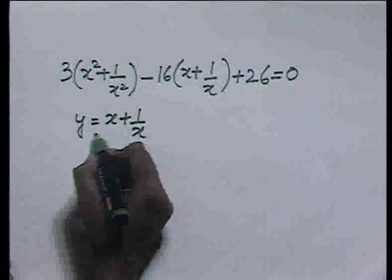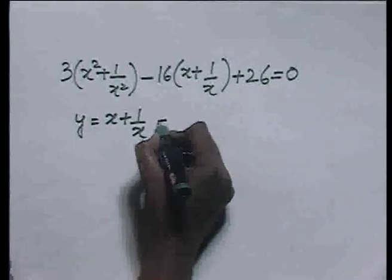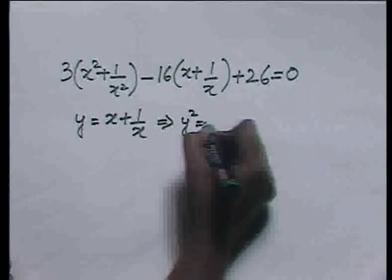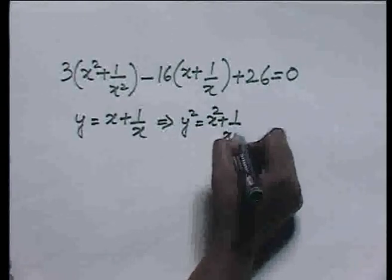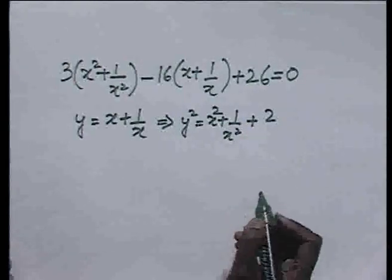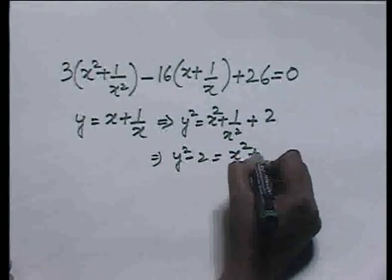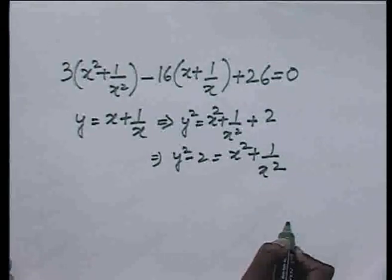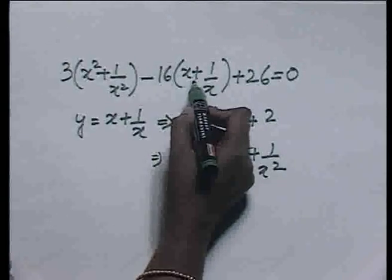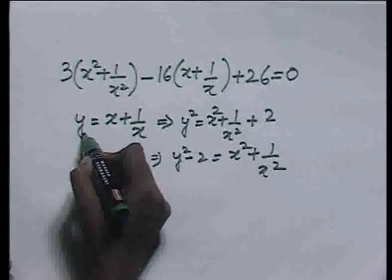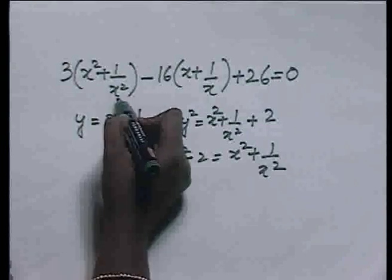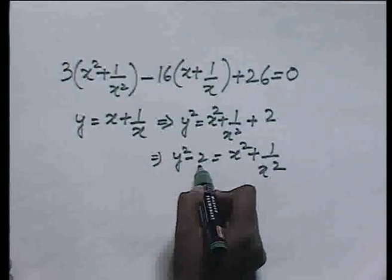For that, let us square both sides of the substitution equation. Squaring, we get y² = x² + 1/x² + 2, or y² - 2 = x² + 1/x². Thus, if we substitute x + 1/x as y, then x² + 1/x² will be y² - 2.